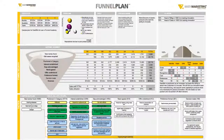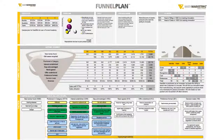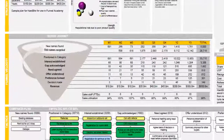The section of Funnel Plan that this affects is of course the Velocity Model here in the middle of the Funnel Plan. Let's zoom in on that and take a look at the basic Velocity Model, which paints a three-year picture of how many buyers we need to move through every single stage in the funnel.